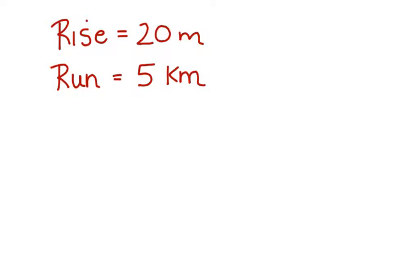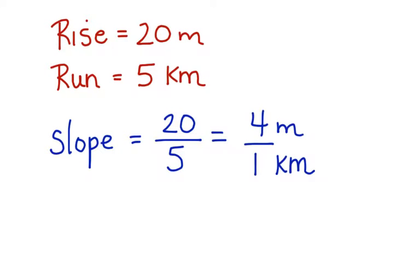Let's write this so that we can figure out the slope of this line, or in this case, of the hill. Here we have the rise of 20 divided by the run of 5. This has a slope of 4 to 1,